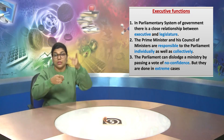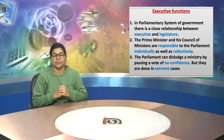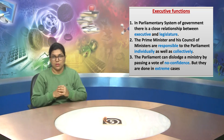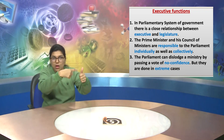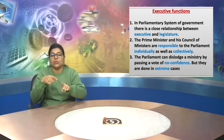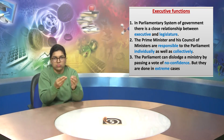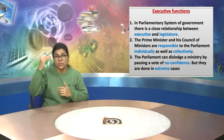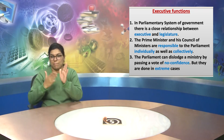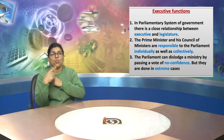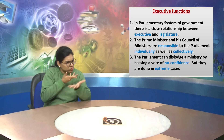We have understood the legislative powers. Now the second is the executive function. Point number one: in a parliamentary system of government there is a close relationship between the executive and the legislature. Point number two: the Prime Minister and his council of ministers are responsible to the Parliament individually as well as collectively.